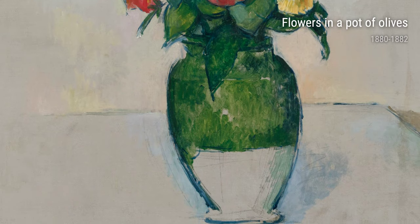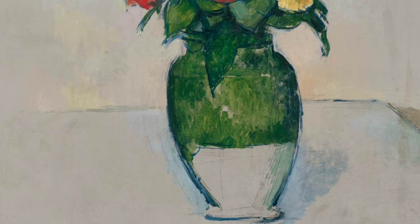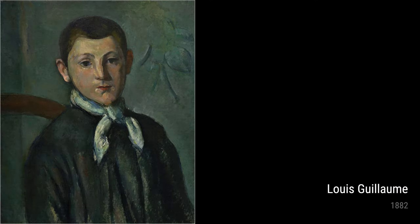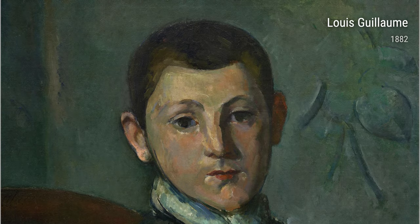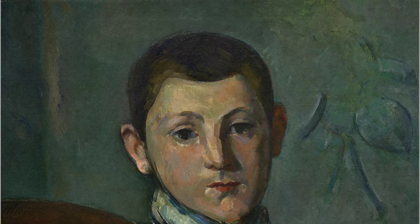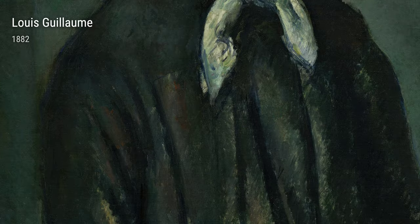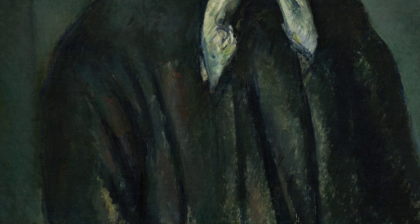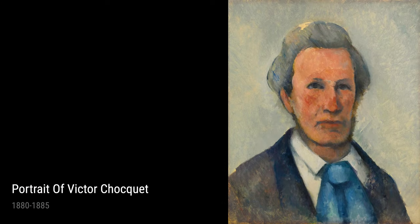We can't forget about Portrait of the Artist's Son. Cézanne loved depicting people too, and this painting shows the love he had for his own son — it's a glimpse into their bond and the love a father has for his child. Let's talk flowers. Cézanne was a master at capturing their beauty. Just look at Flowers in a Pot of Olives — the vibrant colors and delicate brush strokes make you feel like you're smelling those flowers yourself. And finally, we have Portrait of Victor Chocquet. Cézanne painted this dude who was an art collector and friend, and this portrait shows the complexity of Victor's character and the bond they shared.